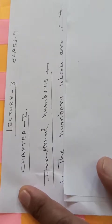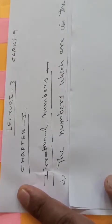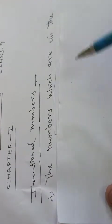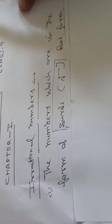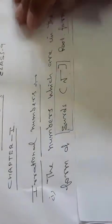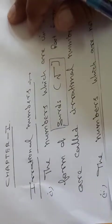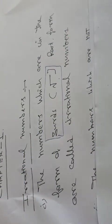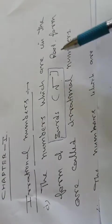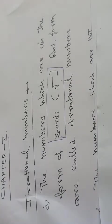What is an irrational number? The numbers which are in the form of surds - surds means in root form - are called irrational numbers. Jo number pure root form mein hotate hain, unko hum surds kahte hain, matlab unko hum irrational number bhi kahte hain.